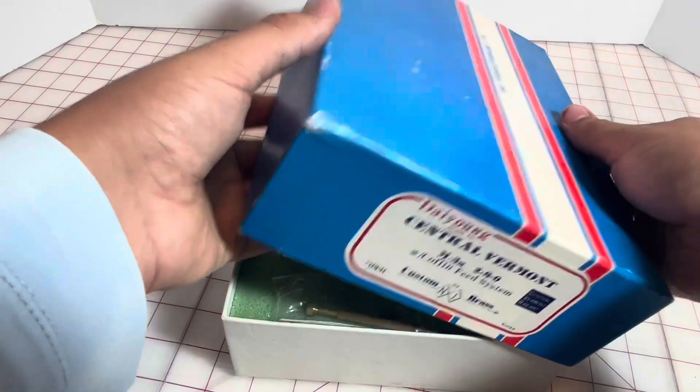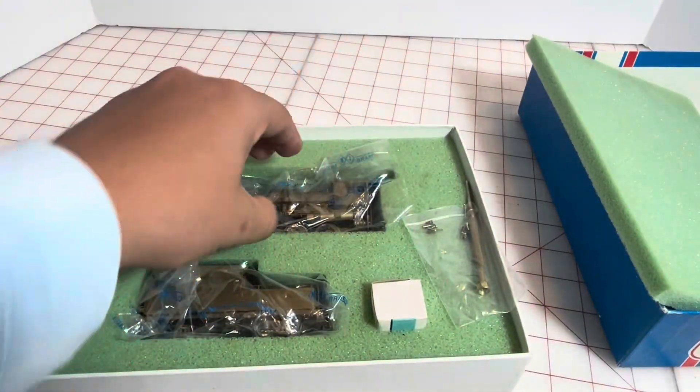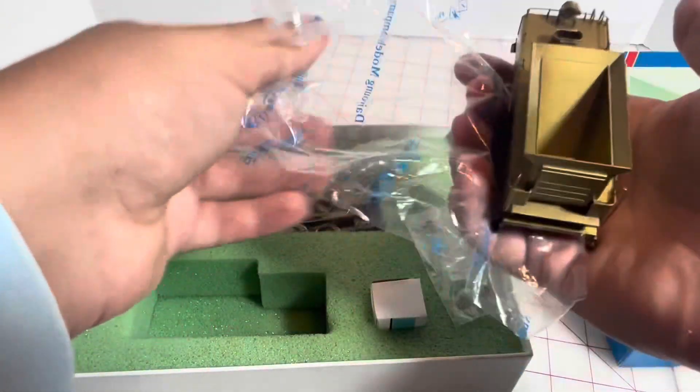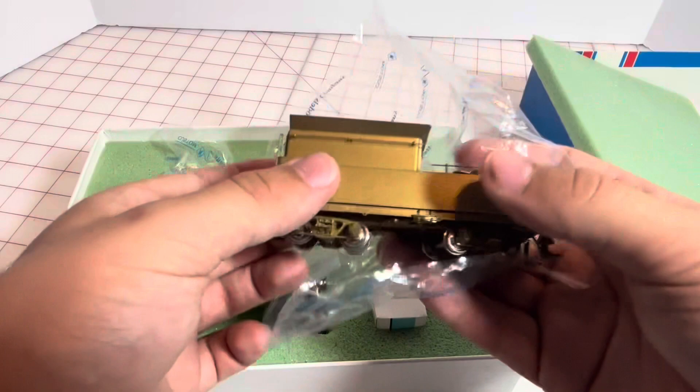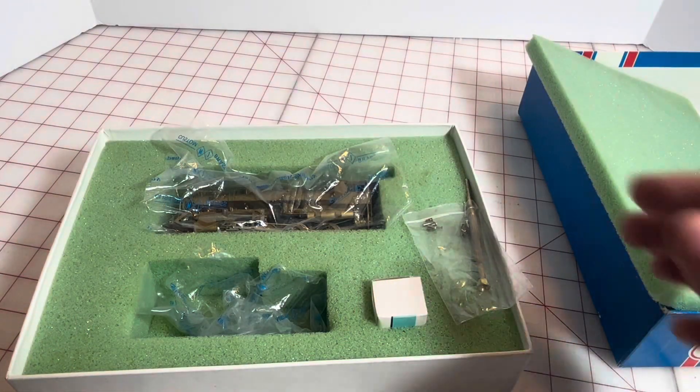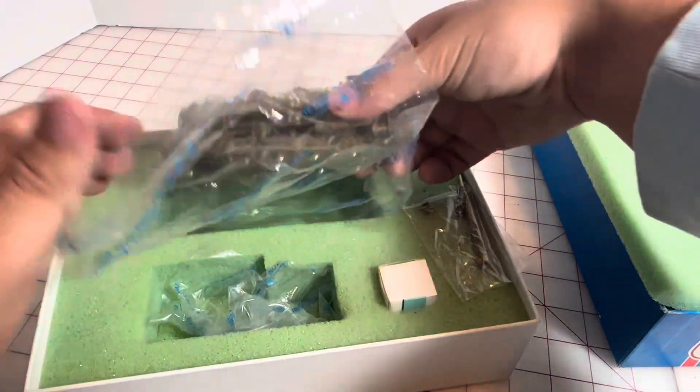This is the coffin feed system. That's the original packing, I'm not gonna look through the other stuff. I can show you the tender. Same tender, I mean maybe a little, I don't think there's any difference at all. But here's the main difference.